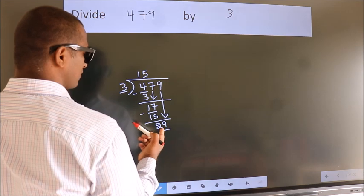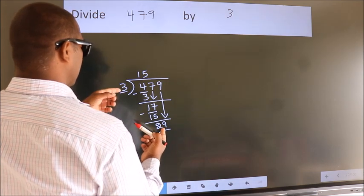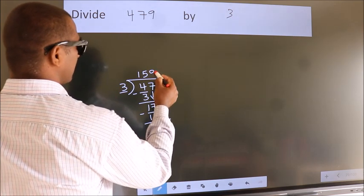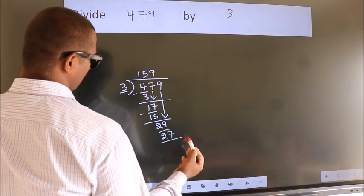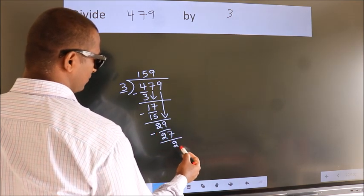A number close to 29 in 3 table is 3 9s 27. Now we subtract. We get 2.